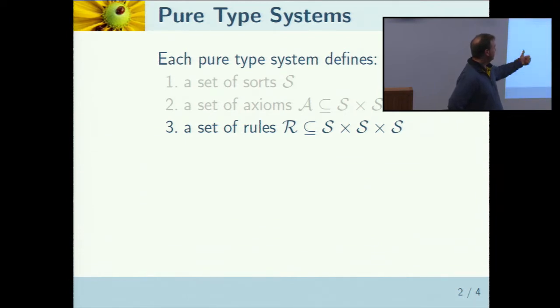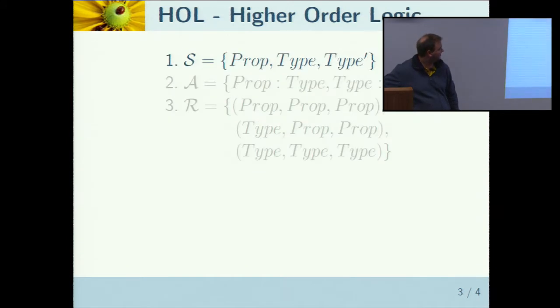Each pure type system has to specify basically three sets, and different theorem provers have chosen different sets, so I'll give you a few examples. Higher order logic, which is often used with Isabelle, and there's also a theorem prover called Higher Order Logic, defines basically three sorts: propositions, type, and basically a type of types.